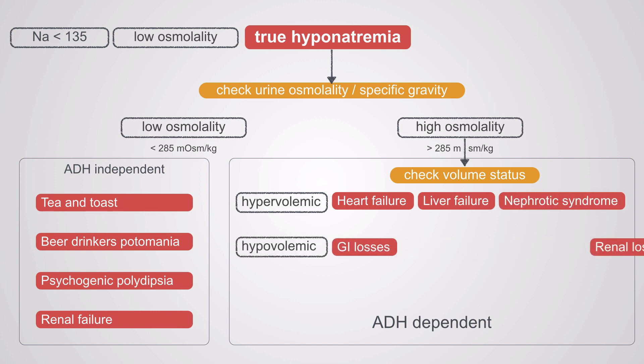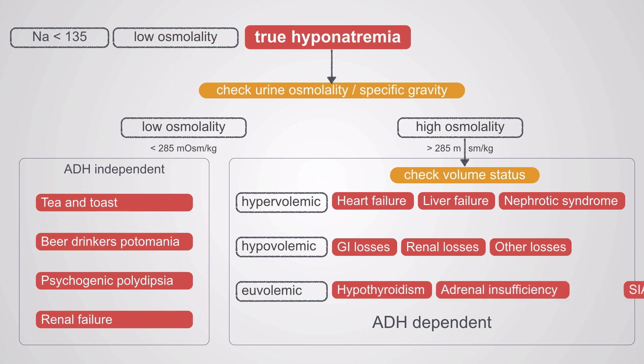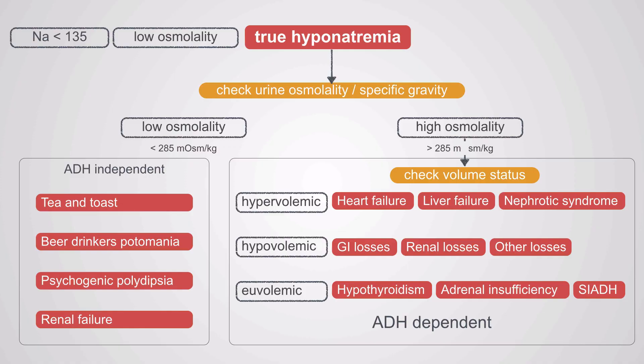We have hypovolemic patients with GI losses, renal losses, and other losses. And we have euvolemic patients — hypothyroidism, adrenal insufficiency, and SIADH, syndrome of inappropriate antidiuretic hormone. However, this is somewhat of a fiction, because even experts are unable to make an accurate clinical assessment of volume status in more than 50% of cases. Essentially, it's a coin toss whether you can accurately determine volume status, so we rely on a more biochemical assessment.